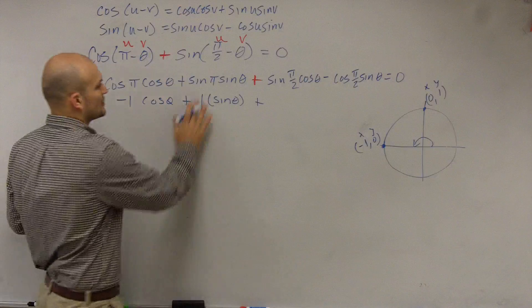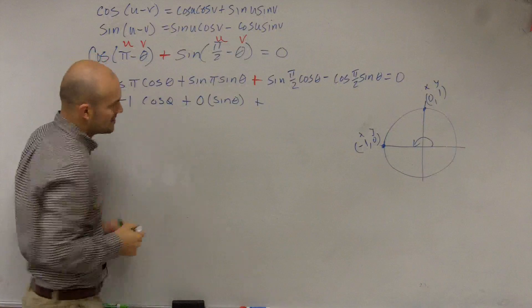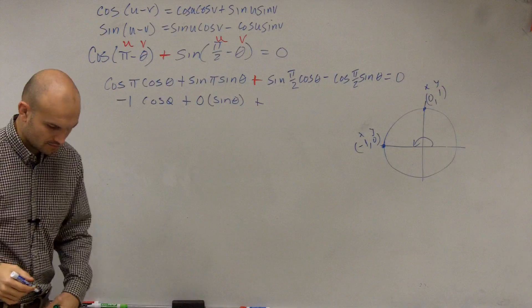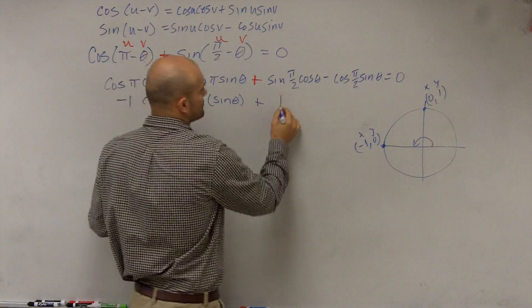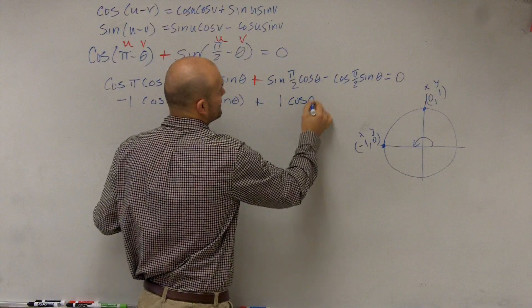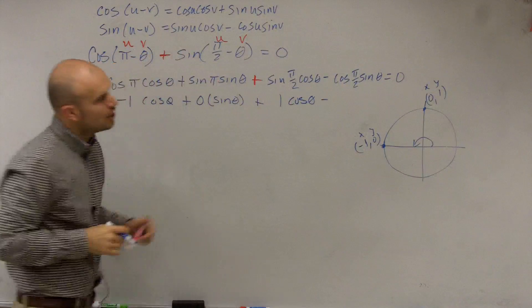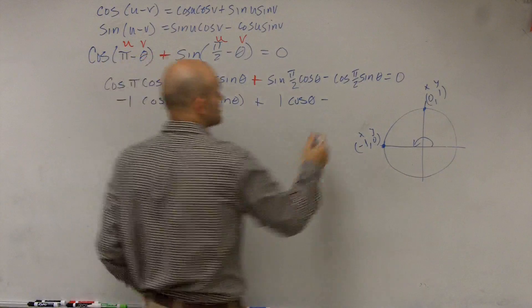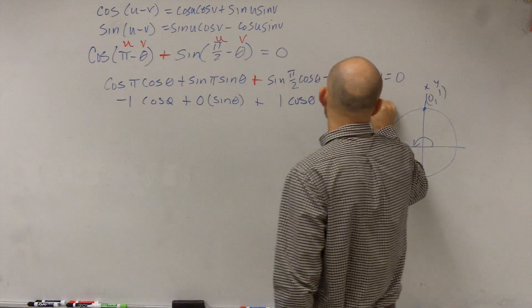The sine of pi is 0, sorry, getting ahead of myself. The sine of pi halves is 1, times the cosine of theta, minus the cosine of pi halves, which is 0, times sine of theta.